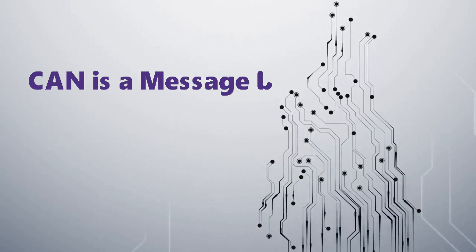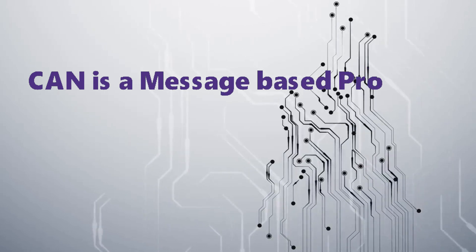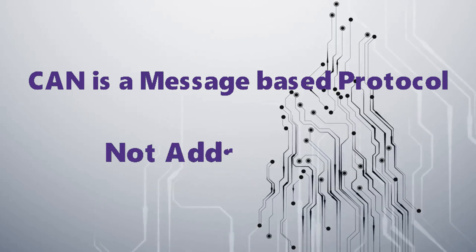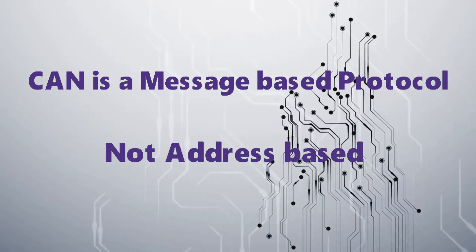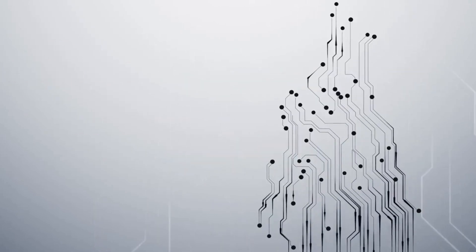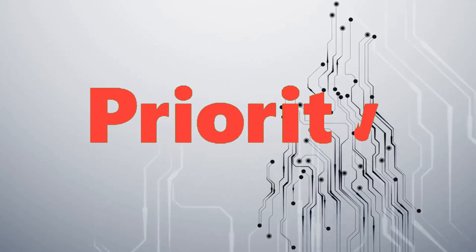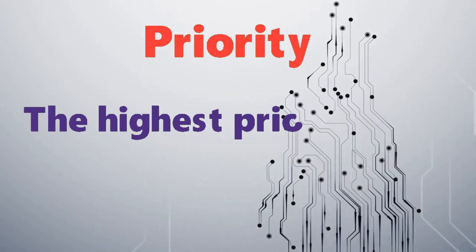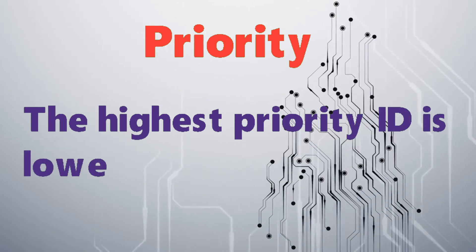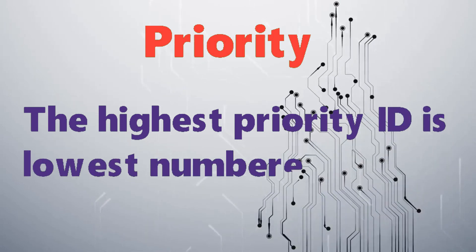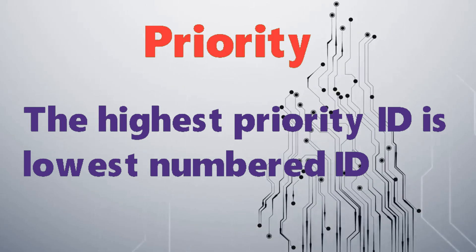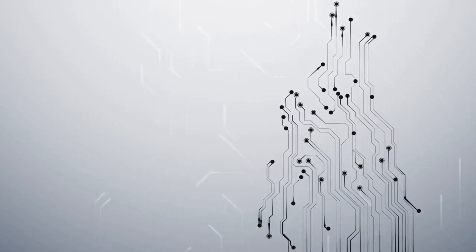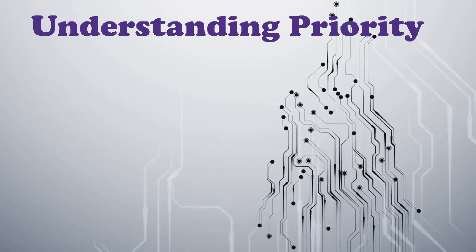As we know, CAN is a message-based protocol and it is not an address-based one. We will understand how the priority works in the CAN protocol. The highest priority ID is the lowest number ID — that is the message ID. We will understand the priority with an example in CAN protocol.